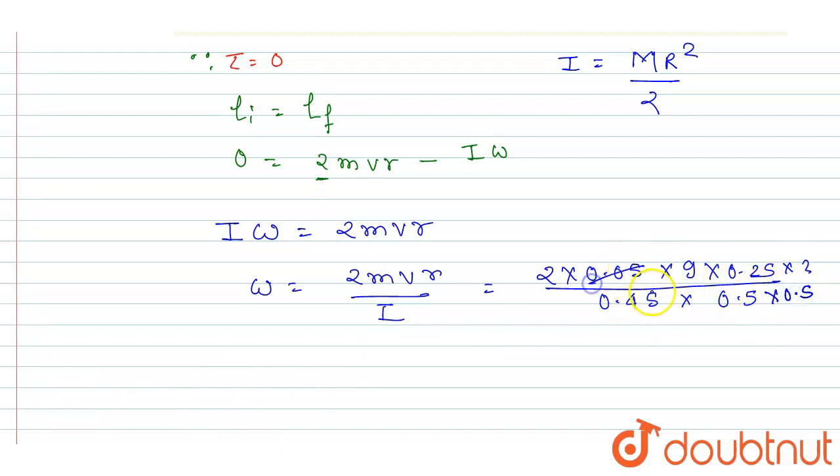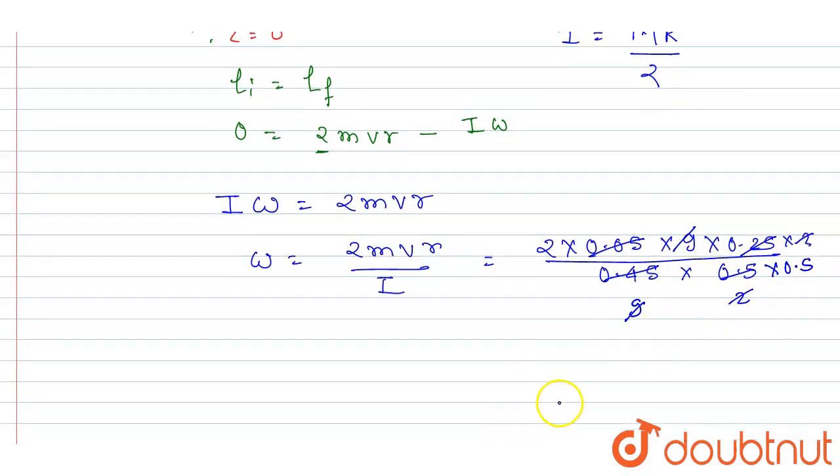Now you can cancel out. This 9 will get cancelled out, and this will cancel out by 2. And finally you will get, if you see, 2/0.5 is 4 radians per second. And this is the answer to this question: omega equals 4.